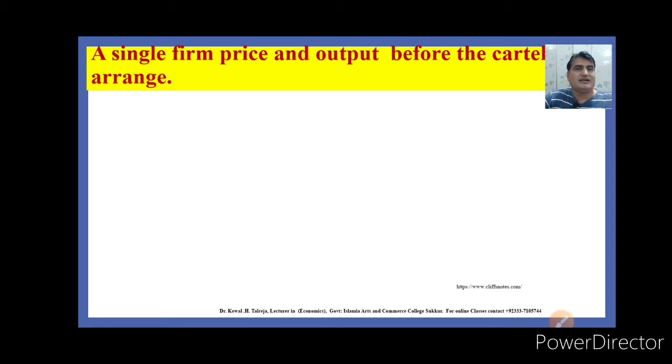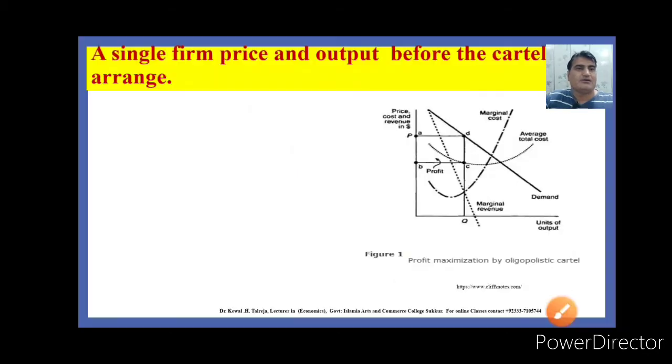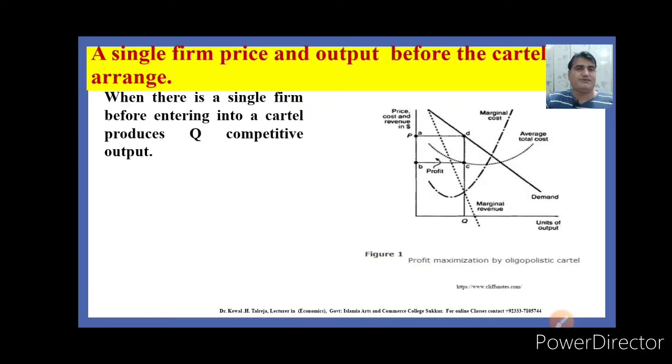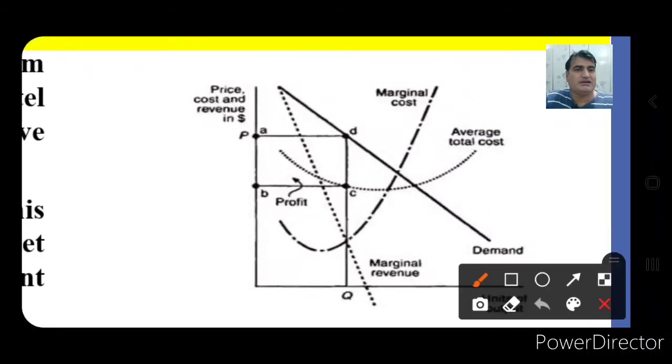Single firm price and output before the cartel formation. Before the cartel is formed, the firm acts as monopoly and would like to produce OQ quantity at price P. When a single firm is operating before entering into a cartel, it produces Q competitive output. Suppose a firm in this industry forms a cartel and sets a price P to maximize joint monopoly profit. The firm is now making economic profit. Once the firm enters into a cartel, it increases joint profit and the firm could earn this economic profit.